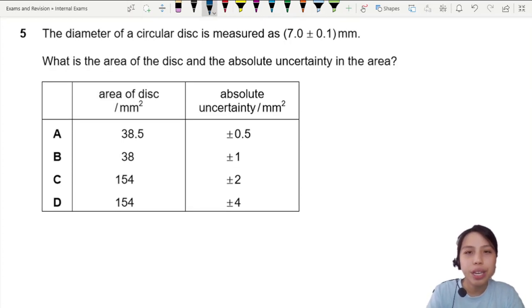The diameter of a circular disk is measured as 7.0 ± 0.1 mm. What is the area of the disk and the absolute uncertainty in the area?